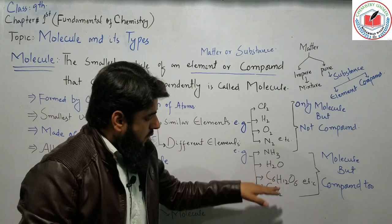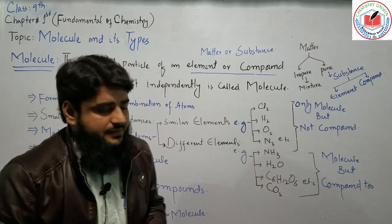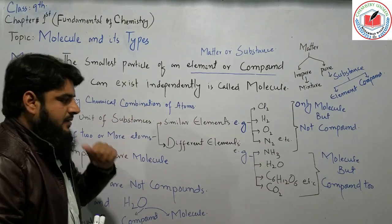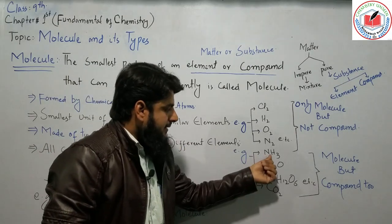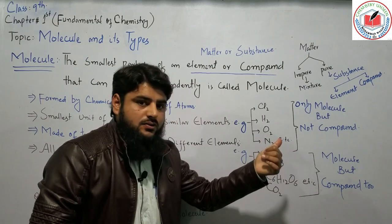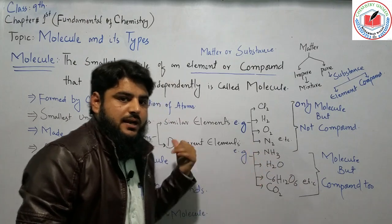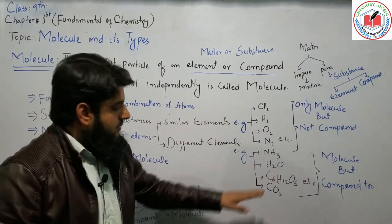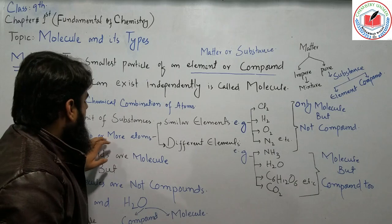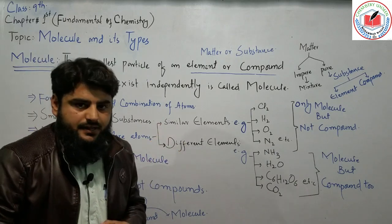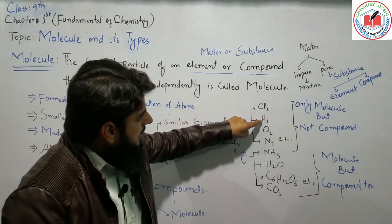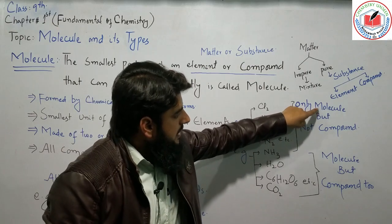For example, compounds like ammonia, water, glucose, and carbon dioxide are made from different elements such as nitrogen, hydrogen, and oxygen. These are very common elements found in compound molecules.